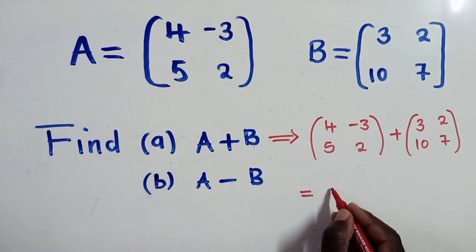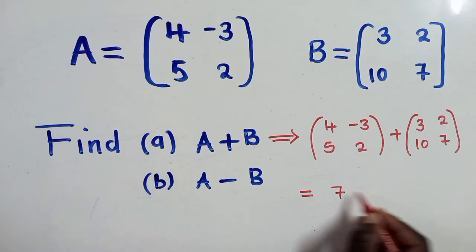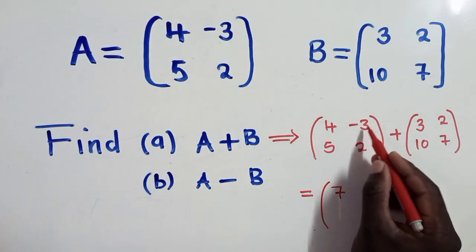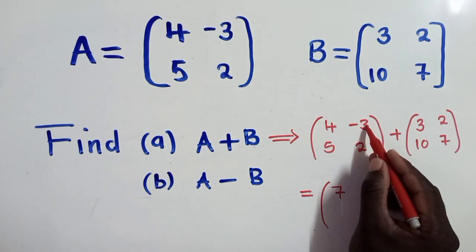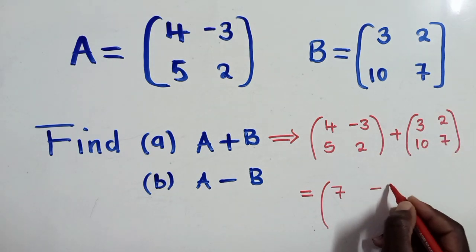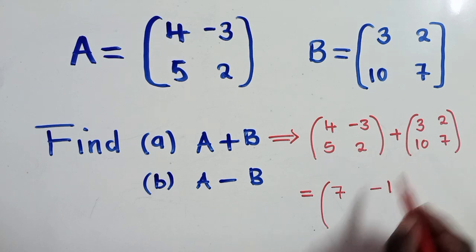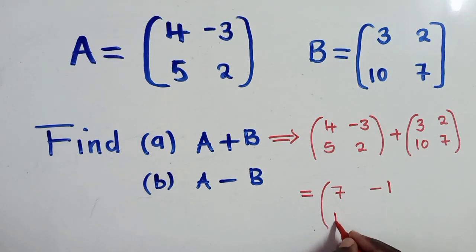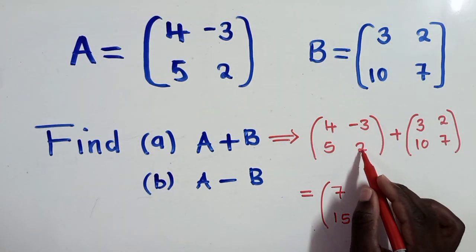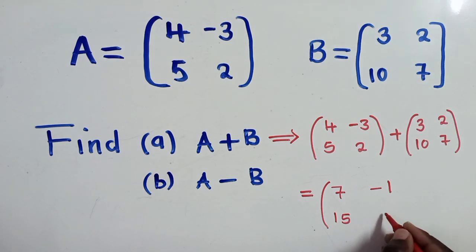4 plus 3, that will give us a 7. Then we come to this one. Negative 3 plus 2, it will give us a negative 1. 5 plus 10, it will give us a 15. 2 plus 7, we'll get a 9.